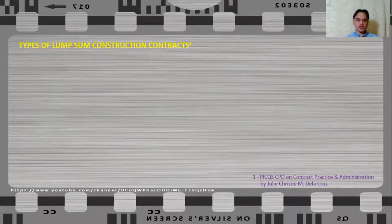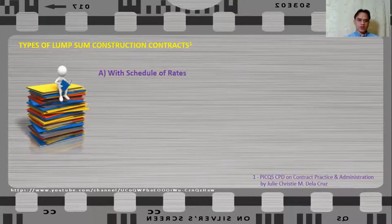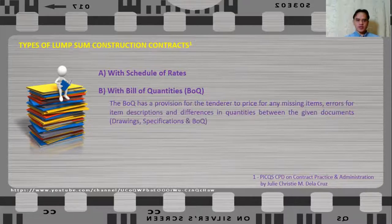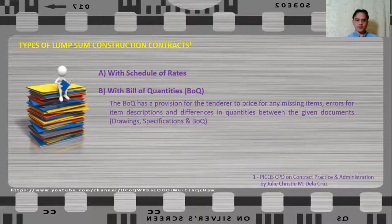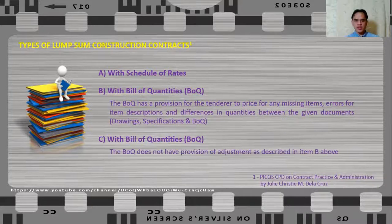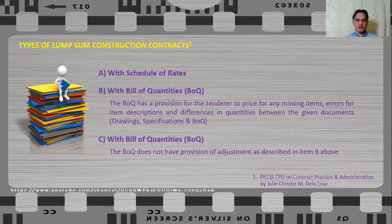Let us now talk about the types of lump sum construction contracts with respect to contract documentation. First, we have a lump sum contract with schedule of rates. We also have a lump sum contract with bill of quantities, which has a provision for the tenderer to price for any missing items, errors in item descriptions, and differences in quantities between documents such as drawings, specifications, and the BOQ itself. And then there is a lump sum contract with bill of quantities that does not have a provision for the tenderer to make such adjustments. The effect of these documents, particularly in valuing variations, will be discussed in a future video on contract administration.